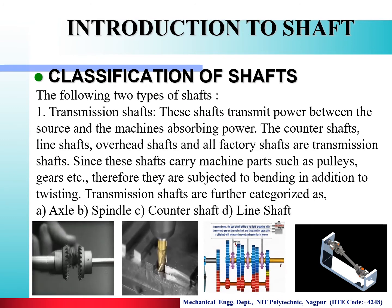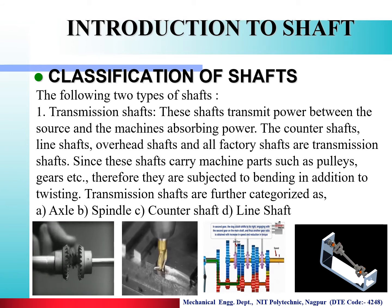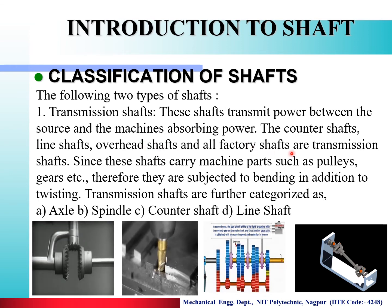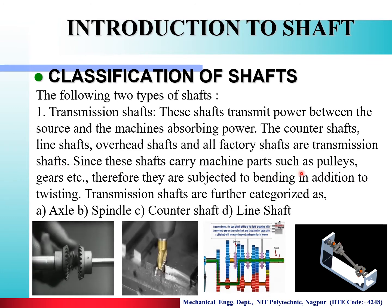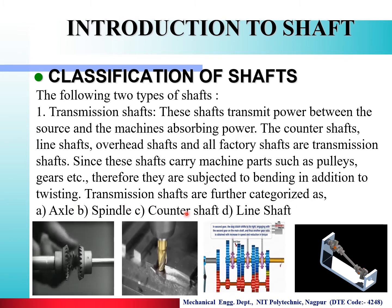Now we see the classification of shaft. There are two types of shaft. The first one is the transmission shaft. This shaft transmits power between the source and the machine absorbing power. The counter shaft, line shaft, overhead shaft and all factory shafts are transmission shafts. Since these shafts carry machine parts such as pulleys and gears, they are subjected to bending in addition to twisting. Transmission shafts are further categorized into axle, spindle, counter shaft and line shaft.